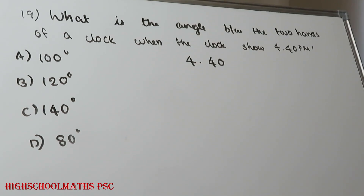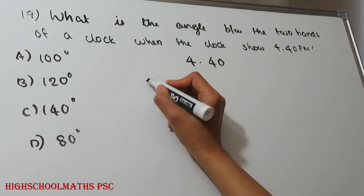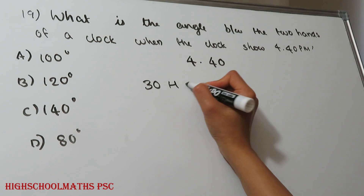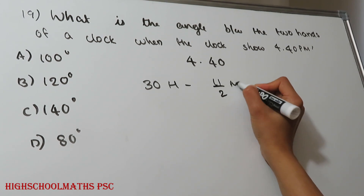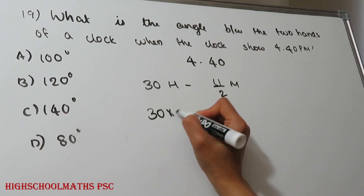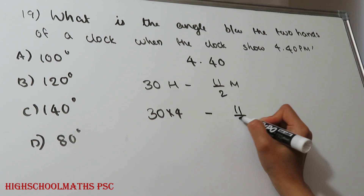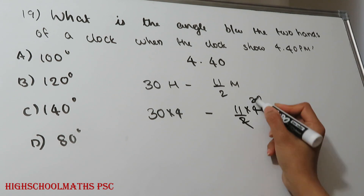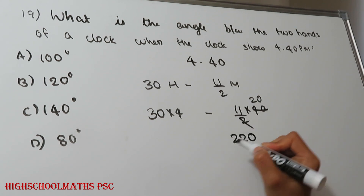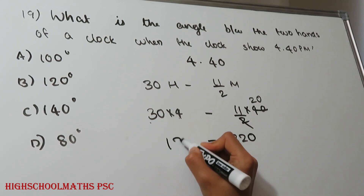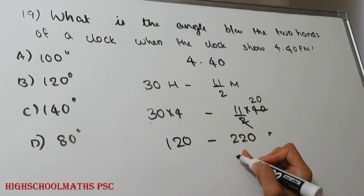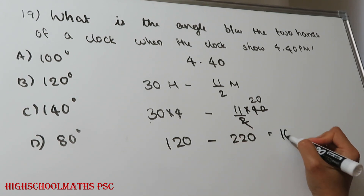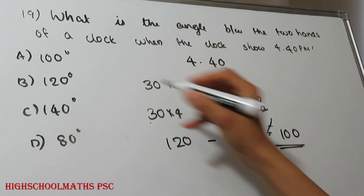Question: What is the angle between the two hands of a clock when it shows 4:40 pm? Using the formula: 30H minus 11/2 M = 30 into 4 minus 11 by 2 into 40. That gives 120 minus 220, and 11 into 20 equals 220. The difference is 100 degrees.